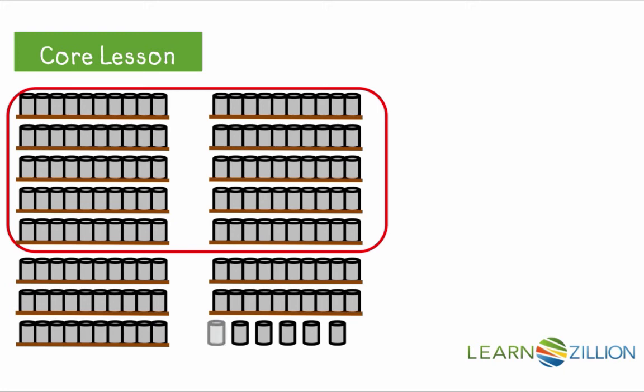Now we have six individual cans, so we will count on from 150 by ones. 151, 152, 153, 154, 155, 156. We have 156 cans. This is a three digit number.